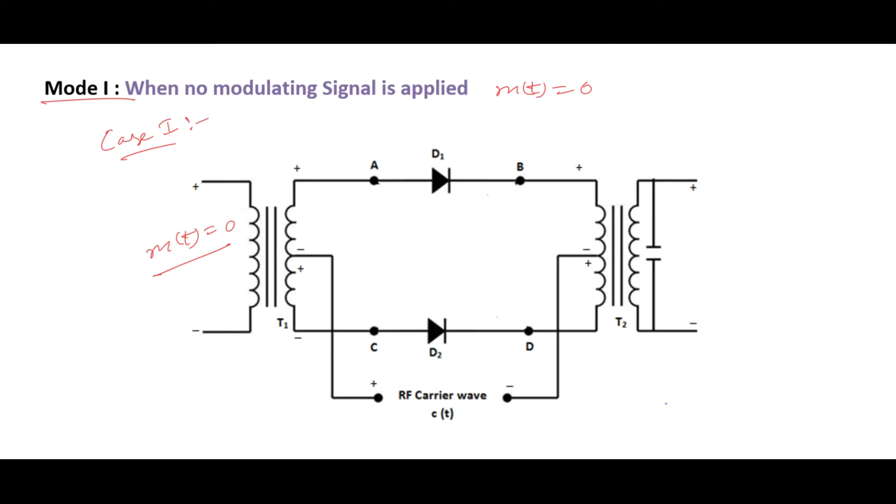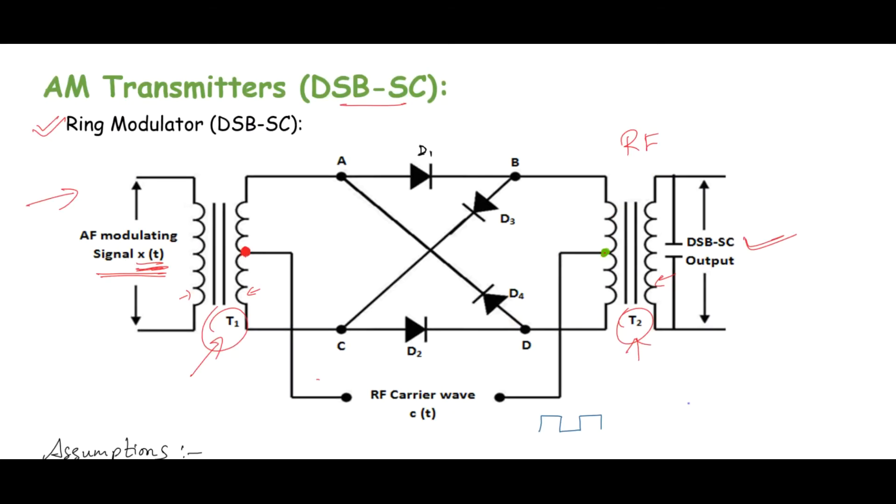The equivalent circuit for the same can be seen here. The currents will start to flow through these diodes in directions shown. At the center tap of primary of T2, the two currents will appear equal and opposite to each other, hence resulting in zero EMF to be induced in secondary winding of T2. Alternatively, we can say that carrier is suppressed at this point.